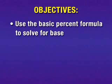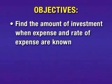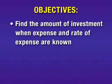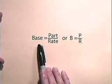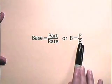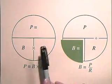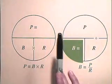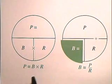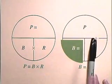We will use the basic percent formula to solve for base. We will find the amount of sales tax when tax amount and tax rate are both known, and we will find the amount of investment when expense and rate of expense are known. Now let's look at the basic percent formula and see how we can solve for base. Base is equal to part divided by rate — B equals P over R. The basic percent formula says that part is equal to base times rate, and so the base itself is part divided by rate.